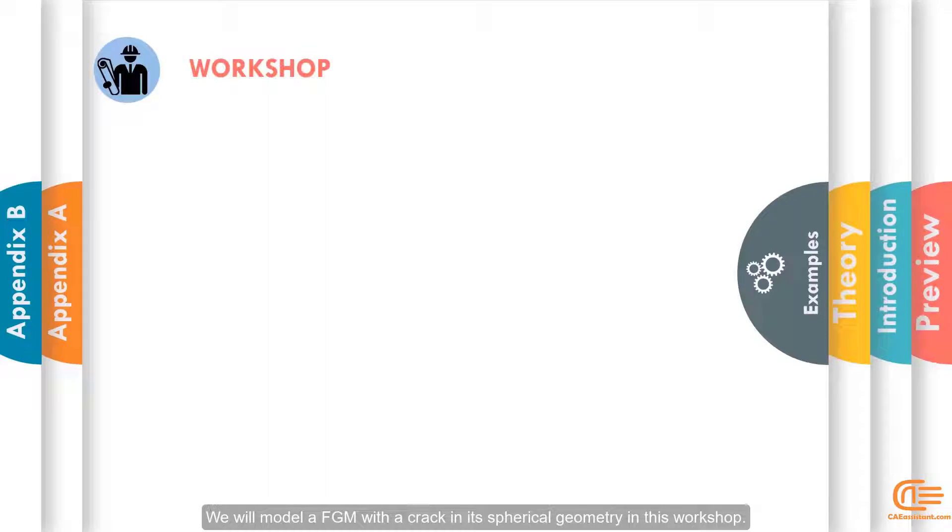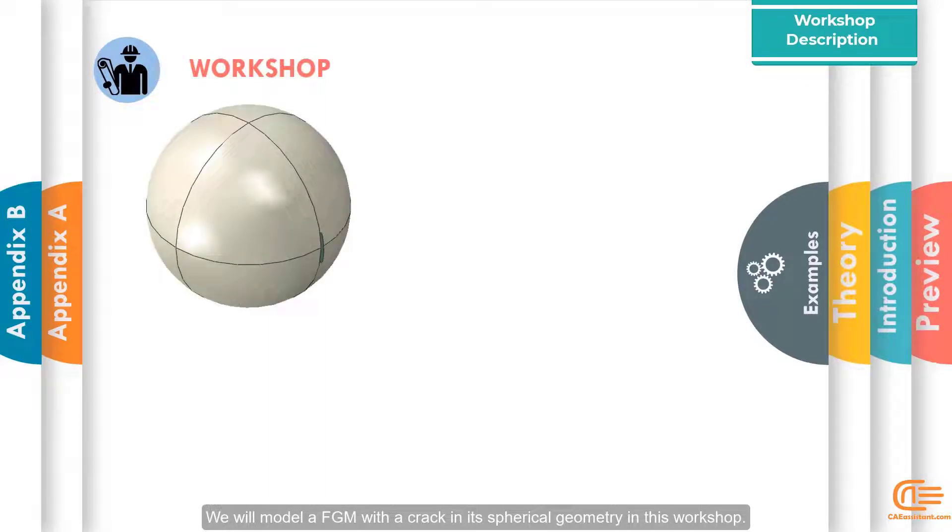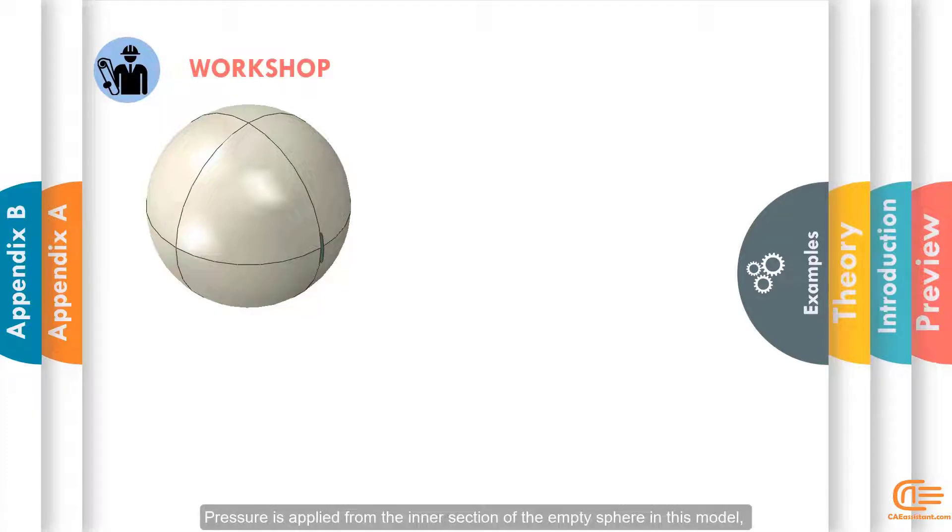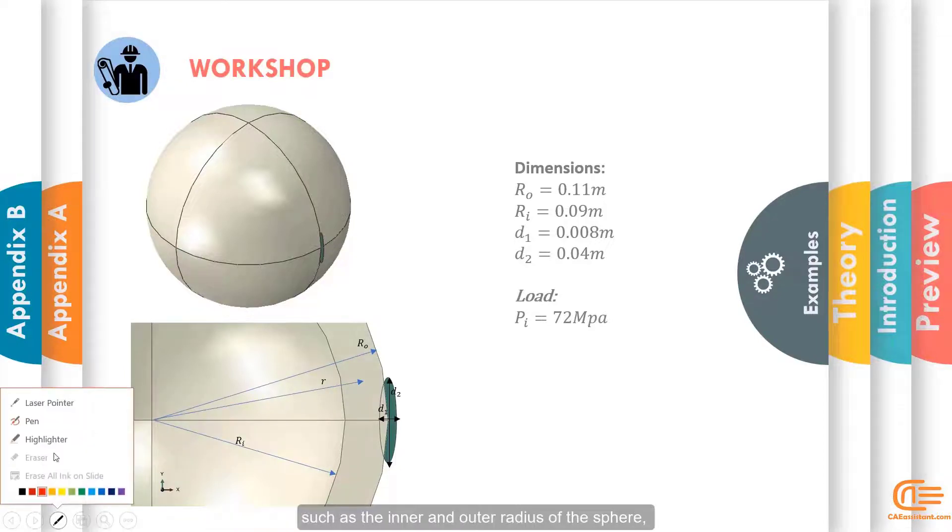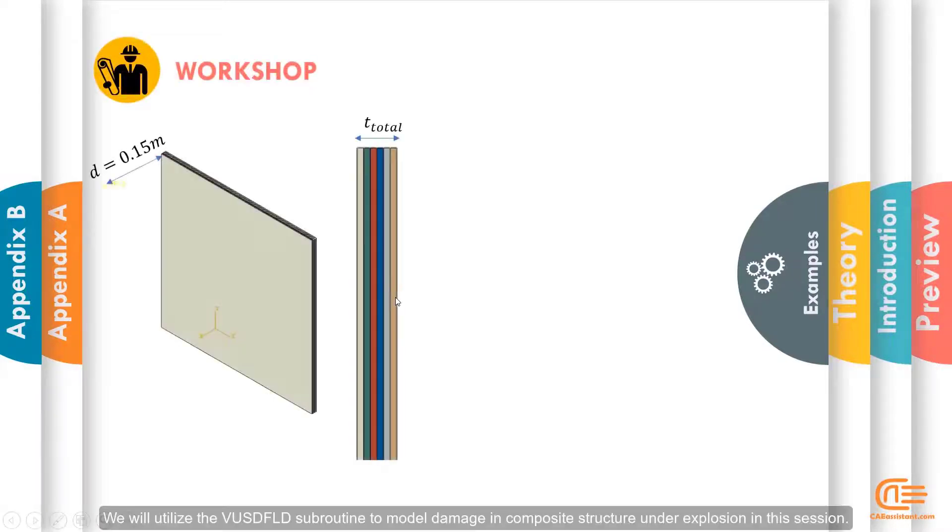We will model a FGM with a crack in its spherical geometry in this workshop. Pressure is applied from the inner section of the empty sphere in this model and we examine the stress distribution within it. In this section, we can observe the geometric characteristics of the model, such as the inner and outer radius of the sphere.